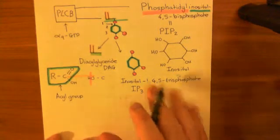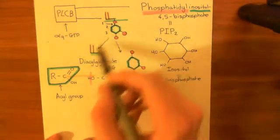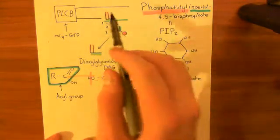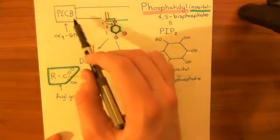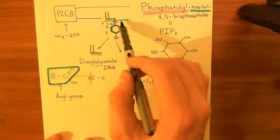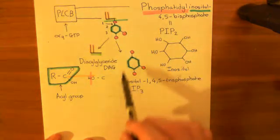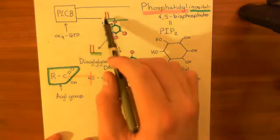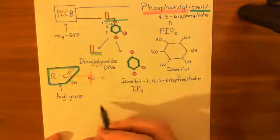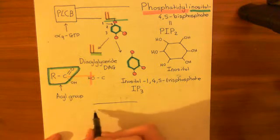So, even though I've drawn the diacylglyceride as though it's coming off into the cytoplasm, it doesn't. It stays in the membrane. Basically, what phospholipase C-beta does is it cuts off the head of the diacylglyceride. The head, this inositol 1,4,5-trisphosphate, goes off into the cytoplasm, whilst the diacylglyceride stays within the cell membrane, the phospholipid bilayer.